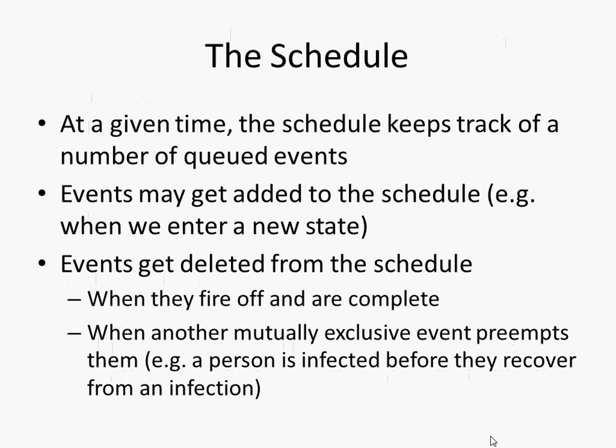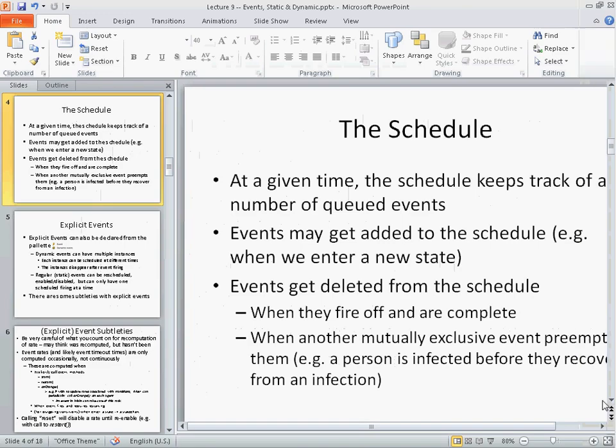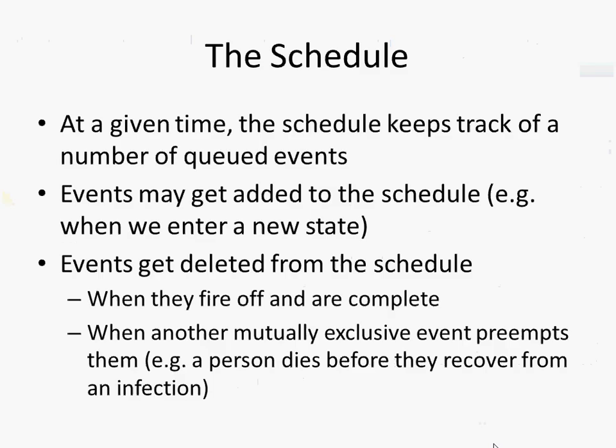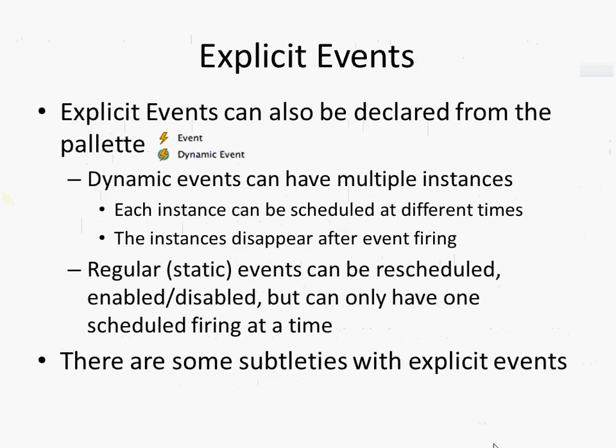Sometimes another mutually exclusive event can occur. For example, a person could die before they recover from an infection. Those are two competing events — two competing risks. One could occur and therefore prevent the other from occurring, so it deschedules that other event.